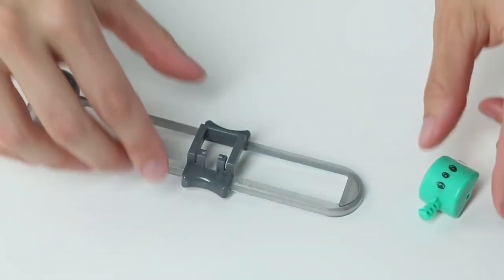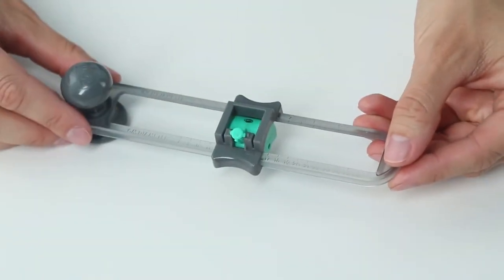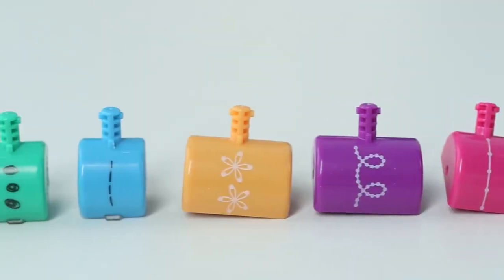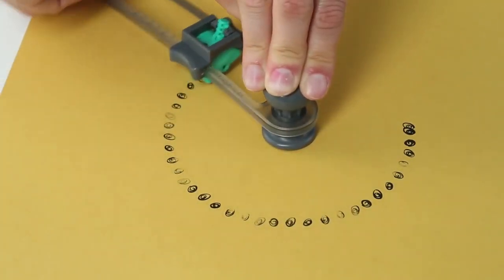This tool fits any Sew Easy and Sew Stamper head. In three easy steps it's simple to stitch and stamp a perfect circle for any crafting project.